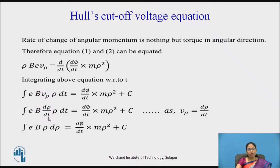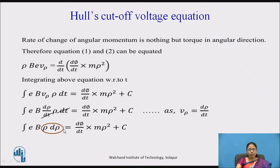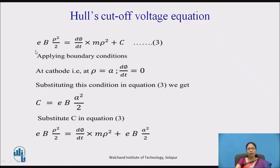The dt terms on the left-hand side cancel, leaving the integral EB·rho d_rho. Integrating rho with respect to d_rho gives rho²/2, so the equation becomes EB·rho²/2 = d phi/dt · m·rho² + C. This is equation 3.